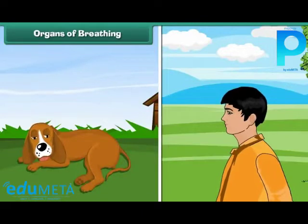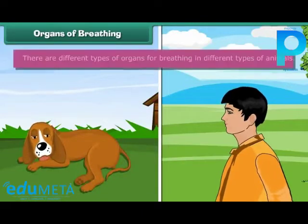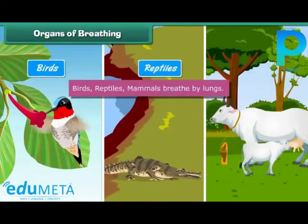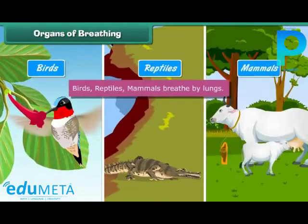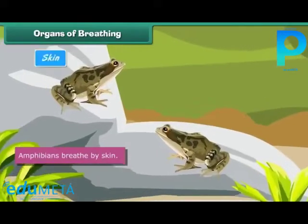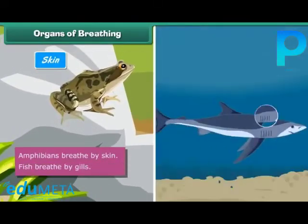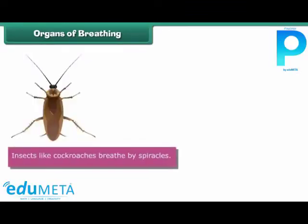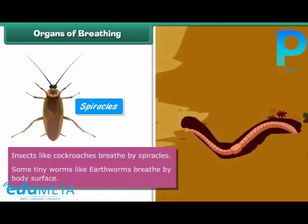Organs of breathing. There are different types of organs for breathing in different types of animals. Birds, reptiles, and mammals breathe by lungs. Amphibians breathe by skin. Fish breathe by gills. Insects like cockroaches breathe by spiracles. Some tiny worms like earthworms breathe by body surface.